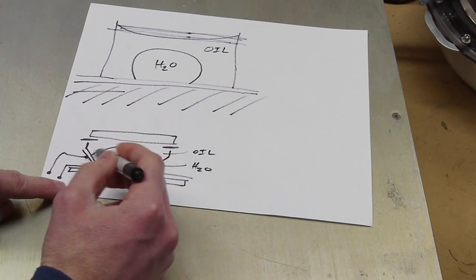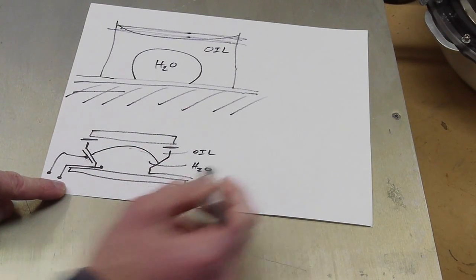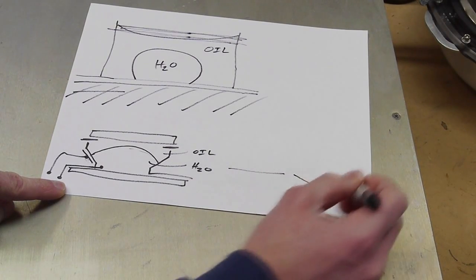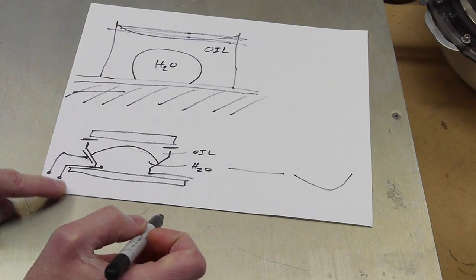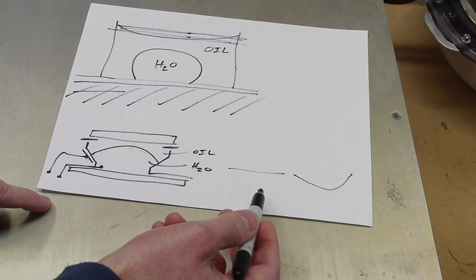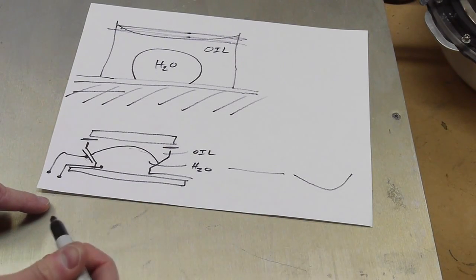So here the contact angle will be changed, and then that changes the shape of this meniscus. So instead of having a curvature like this, we might be able to make it flat, or we might even be able to make it bow the other way. So liquid lenses can change from no power, to negative power, to positive power.